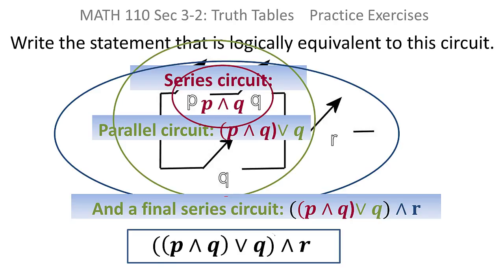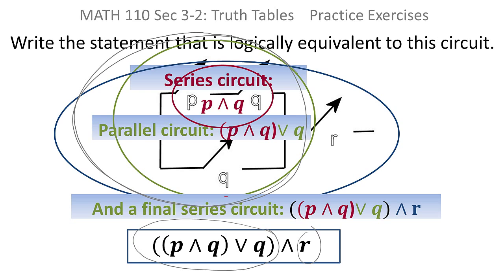So what you already had compared to the R, this is what you already had, all of this, compared with the R, they're on the same level, which means it is a series circuit, which means it is an AND.